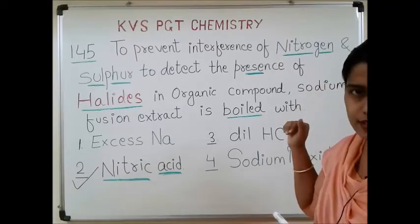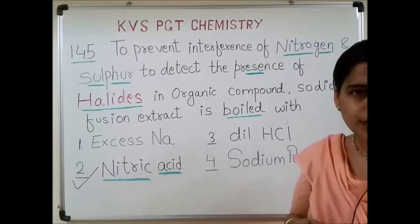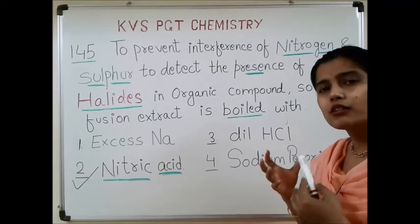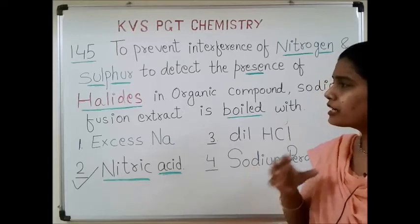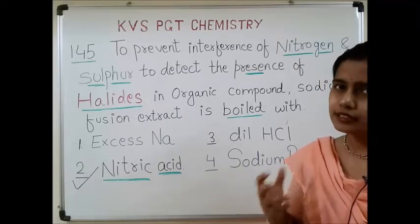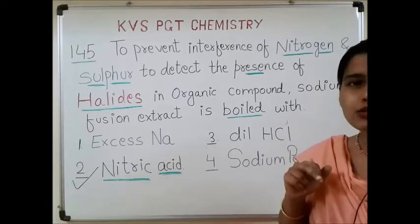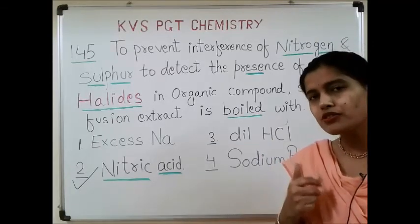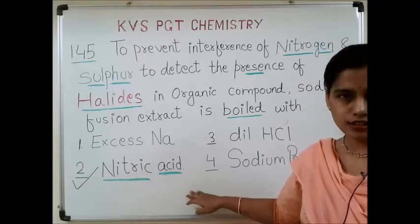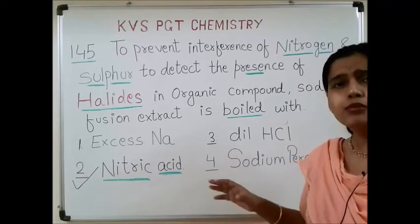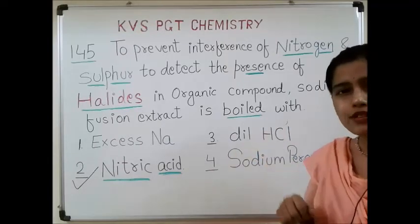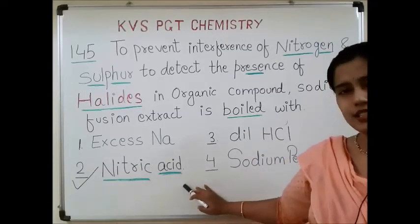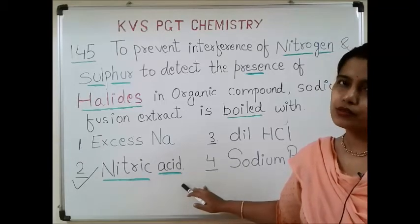Sodium cyanide is formed due to the presence of nitrogen, and sodium sulfide is formed due to the presence of sulfur. These actually interfere with the halogen test. So we boil the sodium fusion extract with nitric acid. Nitric acid, being a very strong oxidizing agent, will decompose the sodium cyanide as well as the sodium sulfide present. So we boil the sodium fusion extract with nitric acid while performing the confirmatory test for halide.